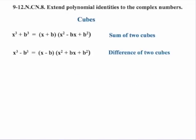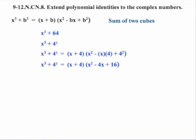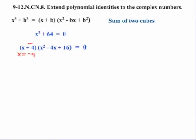Let's look at cubes — the sum of two cubes applied to complex numbers. Take x cubed plus 64, which we rewrite as x cubed plus 4 cubed. Applying our identity, x cubed plus 4 cubed factors as (x plus 4)(x squared minus 4x plus 16). We can simplify a bit. We know x plus 4 gives a real solution (x equals negative 4). But we're going to have three solutions total, so we also need to consider x squared minus 4x plus 16 equals zero.